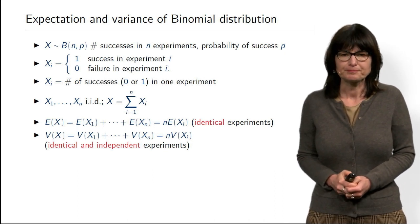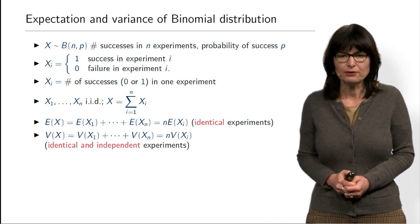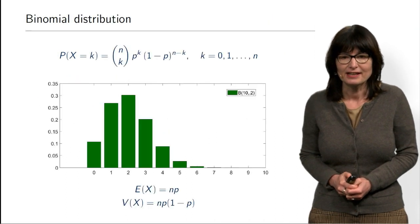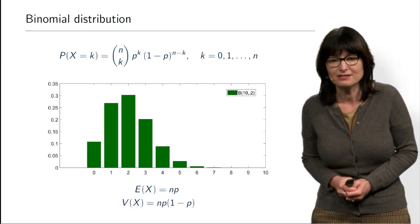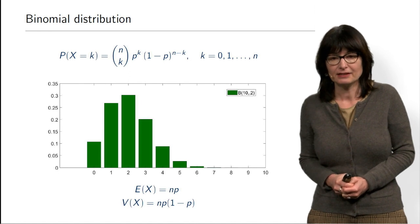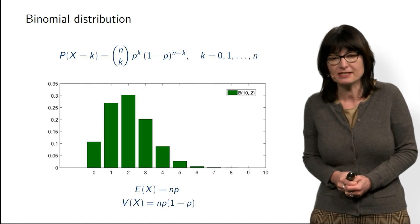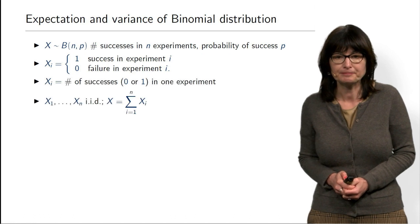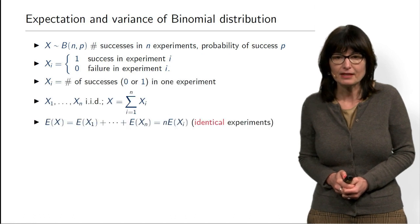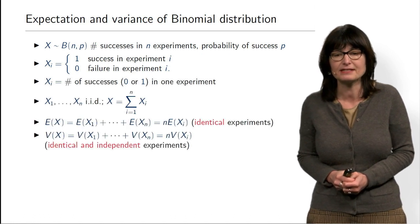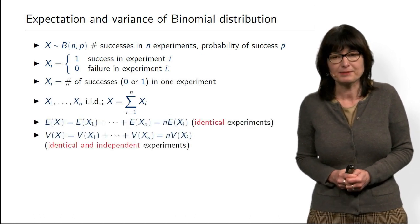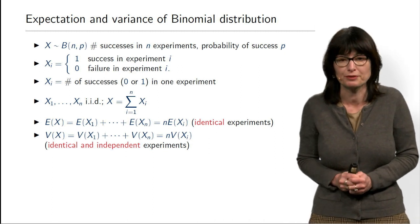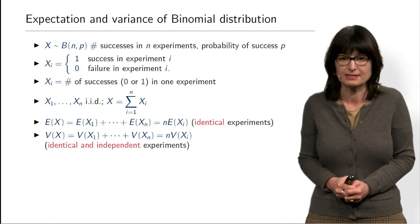You can already see that both expectation and variance have this factor N — expectation is N times something and variance is also N times something. That was the most important message. We now have to show that we are multiplying by the right thing, so we need to find the expectation and variance of Xi.